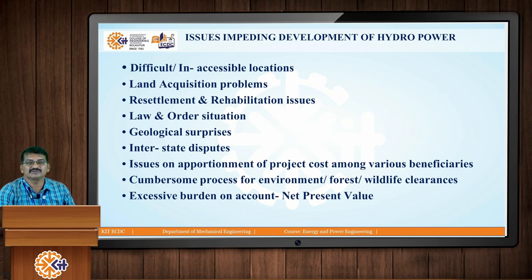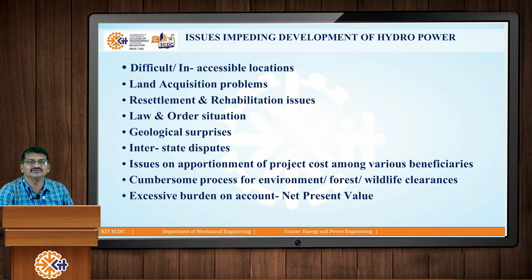Law and order situations may arise due to the resettlement of all these villages. There can also be geological surprises — if the location is finalized and geological surprises are found, then we have to change the location. Interstate disputes are also there; a good example is between Andhra Pradesh and Maharashtra. There are also issues on the appropriation of project cost among various beneficiaries, and the overall construction cost of a hydroelectric power plant is very high.